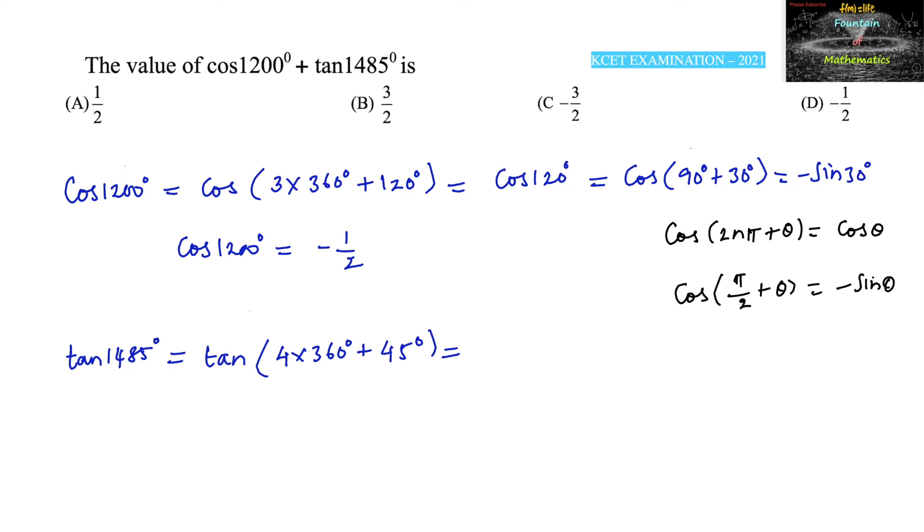And since we know that tan n pi plus theta, any integral multiple of pi plus theta, can be taken as tan theta, where n is any integer. Let me write 8 times 180 degrees plus 45, so that we can use tan 45 degrees, which is equal to 1.